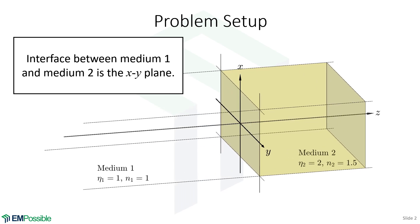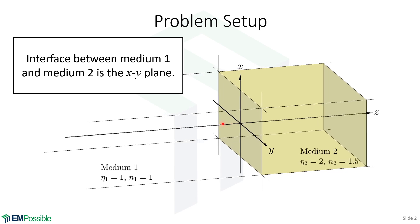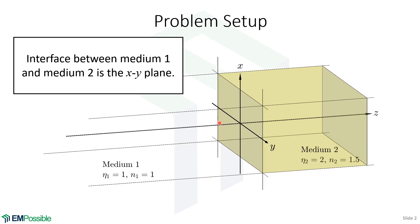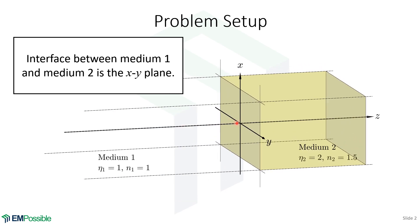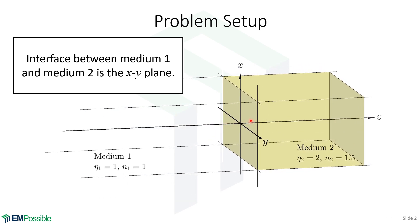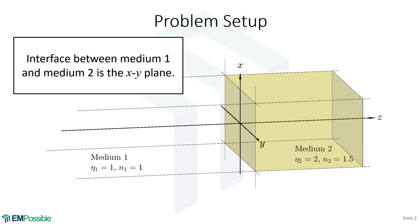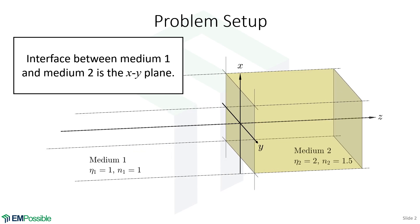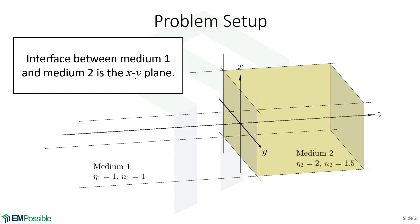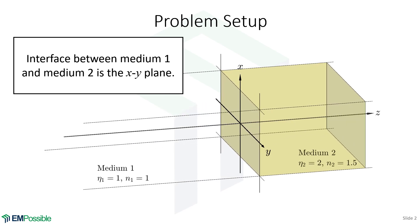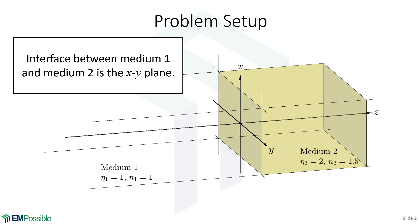Medium one extends off to the left to infinity, and then medium two extends off to the right out to infinity. These materials are also of infinite extent in the x and y directions.